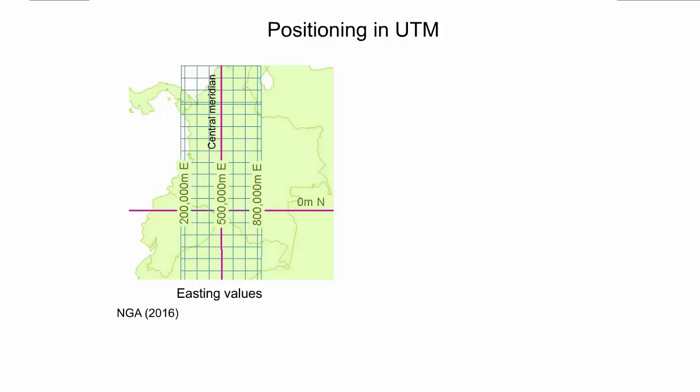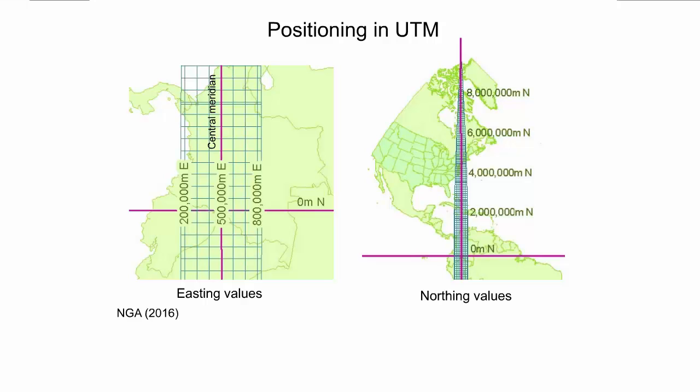In the UTM system, positions are expressed as x and y coordinates called easting and northing, which are provided in meters. A full description of a point position contains also the zone number and the hemisphere. The left figure depicts part of UTM zone 18 projected in the transverse Mercator projection, overlaid with a coordinate grid. The easting has a value of 500,000 meters at the central meridian of each zone, independent of whether the area of interest is located in the northern or southern hemisphere. The right figure shows the complete extent of UTM zone 18 in the northern hemisphere. The northing has a value of 0 meters at the equator for the northern hemisphere. For the southern hemisphere, the northing at the equator is 10 million meters, which is not shown in this figure.